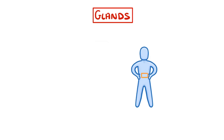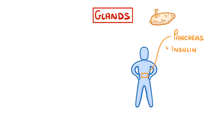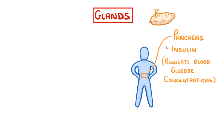Just in front of the kidneys, we have the pancreas. The pancreas produces the hormone insulin, and as we'll see in the next video, this helps us to regulate our blood glucose concentrations, which just means the amount of sugar in our bloodstream.